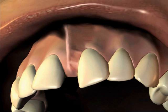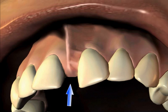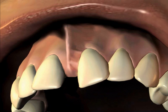An excessive frenum is an example of this. With an excessive frenum, a small band of muscle has attached too close to your teeth. If this band attaches near the top of the gum tissue ridge, it can cause a spreading of your teeth when they erupt. This spreading is called a diastema.